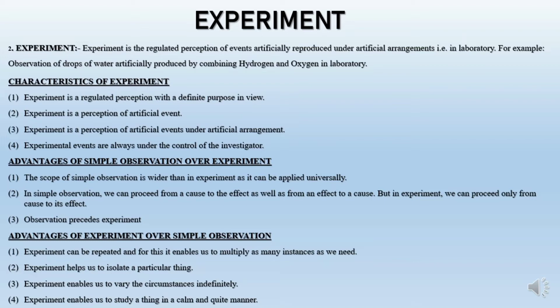There are certain advantages and disadvantages of experiment and simple observation. First, the advantages of simple observation over experiment. Number one, the scope of simple observation is wider than experiment, as it can be applied universally. Since simple observation is done under natural arrangement, its scope is always wider. Secondly, in simple observation we can proceed from a cause to its effect, as well as from an effect to a cause, but in experiment we can proceed only from cause to its effect.